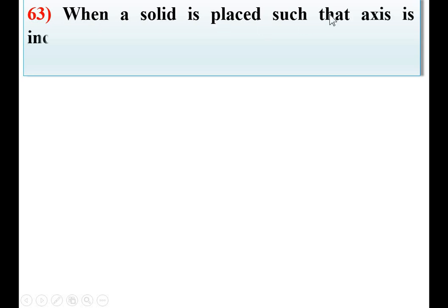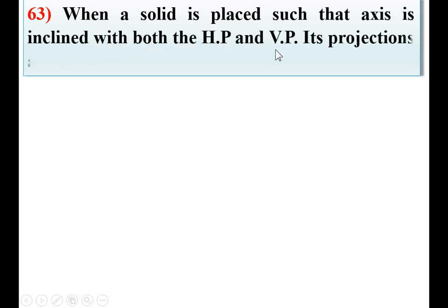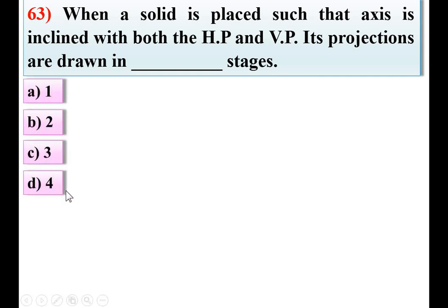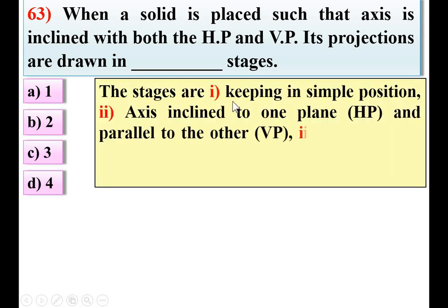Question 63: When a solid is placed such that its axis is inclined with both the HP and VP, its projections are drawn in how many stages? Options: 1, 2, 3, or 4. The solid is inclined to HP and VP both — how many stages are required to get the projections? There are actually three stages.